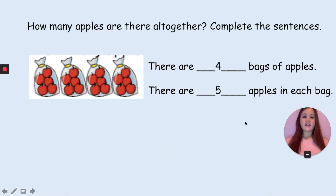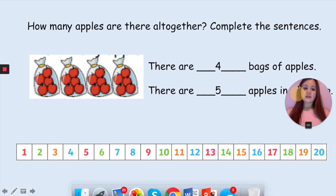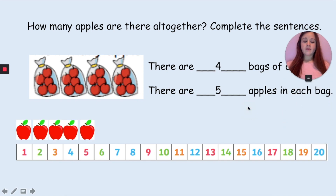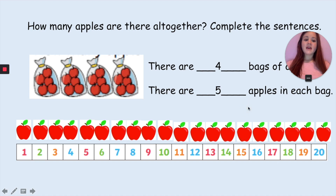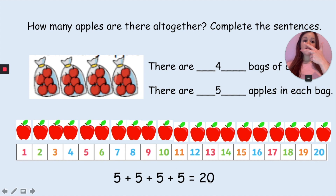How many apples are there all together? Complete the sentences. There are four bags of apples — 1, 2, 3, 4. There are five apples in each bag — we check each bag and they all have five. They are all equal. We can use a number track: five, and another five, and another five, and another five shows that we have twenty. So our number sentence is five add five add five add five equals twenty. Counting in fives: five, ten, fifteen, twenty.